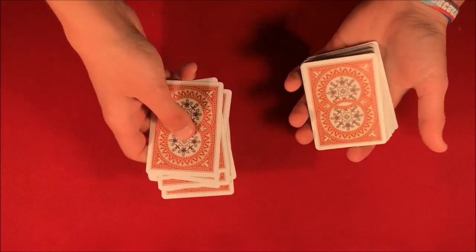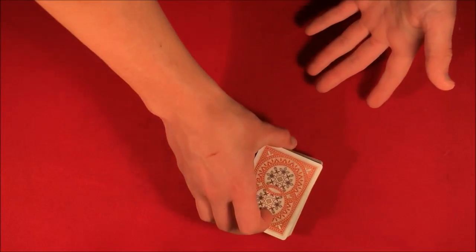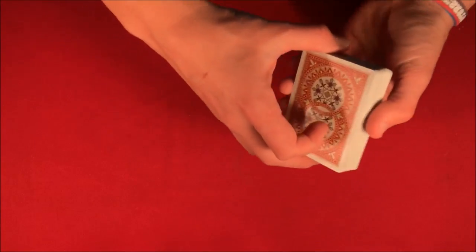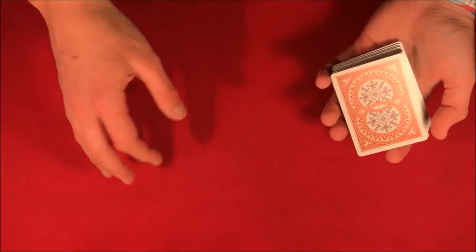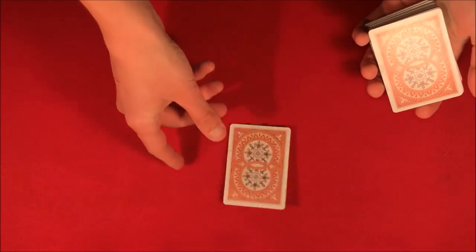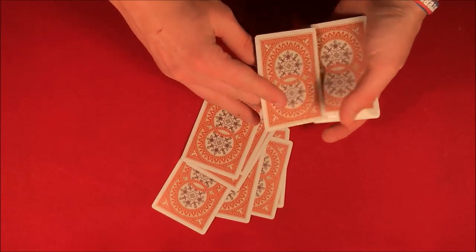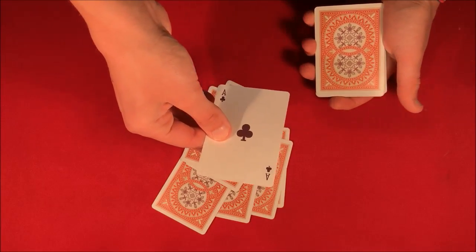At this point he just explained to the spectator what to do. Penn says, you know what, I'll give the deck back to you, and he turns his back away. The spectator deals out his chosen number eight, so the spectator would deal out one, two, three, four, five, six, seven, and the spectator would look at their card.